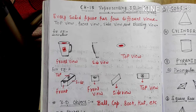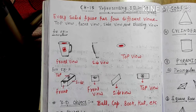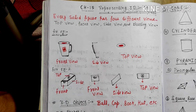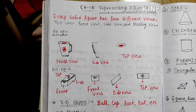Let us start with the definition first. The definition of solid figures: every solid figure has 4 different views. The first is top view, front view, side view and slant view.